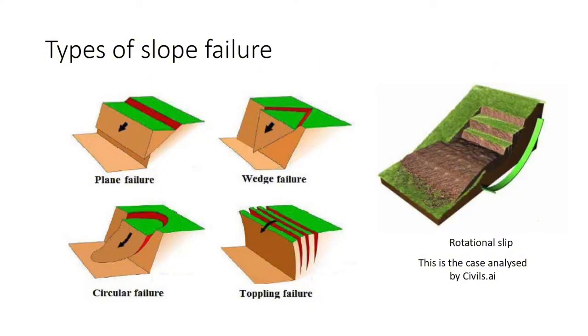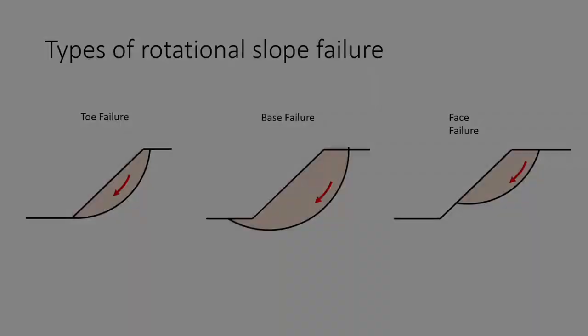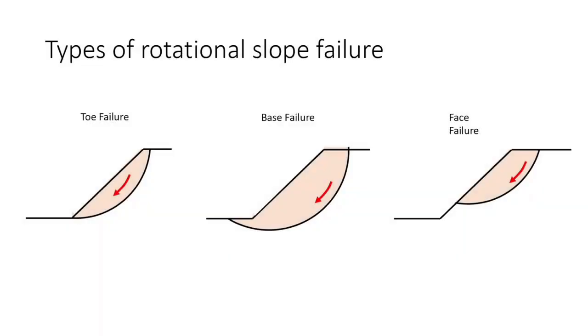Rotational slips are the most common form of slope failure and follow a circular arc through the soil. Translational slips are also common which are typically found when the top soil layer is underlain by a soil of a different strength. Further details on rotational slips will be covered in a later video.